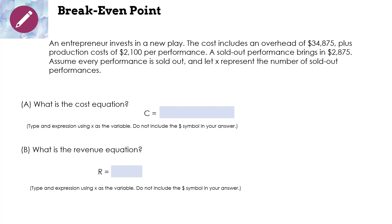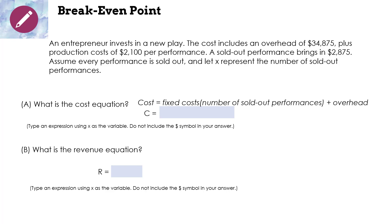Let's look at an example. An entrepreneur invests in a new play. The costs include an overhead of $34,875 plus production costs of $2,100 per performance. A sold-out performance brings in $2,875. Assume every performance is sold out and let x represent the number of sold-out performances. Part A: what is the cost equation? To answer this, we need to type an expression using x as the variable.